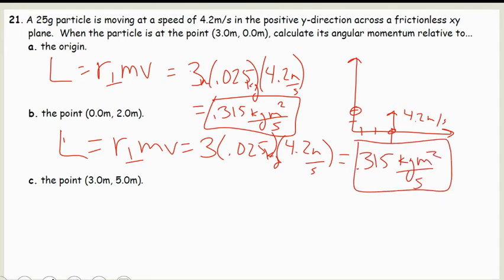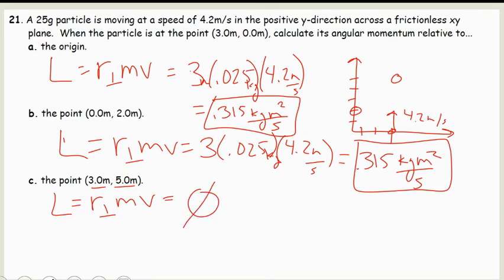In our last case, it's relative to the point (3.0). Looking at position 3.0, there is no perpendicular distance. So if we have our perpendicular radius times m times v, there's no perpendicular distance. Our angular momentum relative to (3.0) is going to be zero.